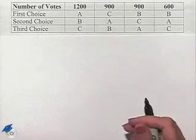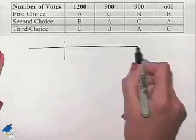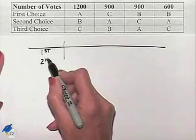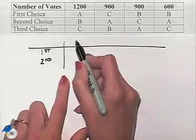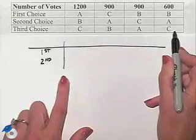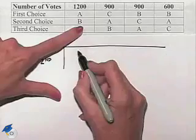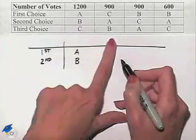We're going to look at the same columns. We're going to list, however, only first and second place, as we won't have C in the result. So we're going to still have the 1,200, 900, 900, and 600. This time, eliminating C means we're going to write down just the A and the B in each column.